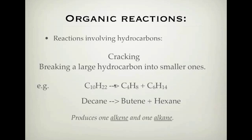This is just an example of what could happen. The main thing to understand is that when we do cracking, you get one alkene — a double-bonded hydrocarbon — and one with a single bond only. So cracking is breaking a large hydrocarbon into smaller ones. If you start with an alkane (all single bonds), when you crack it, you get an alkene with a double bond and an alkane together. It produces one alkene and one alkane in the cracking process.